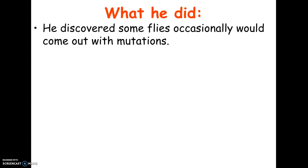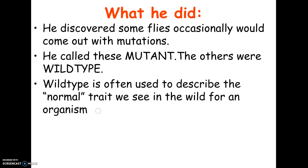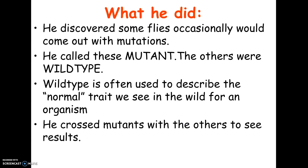Morgan discovered that occasionally flies came out with mutations. They even exposed flies to X-rays, which cause mutations in DNA. When a fly appeared with a mutation he called it a mutant fly, and the normal ones were called wild type. You should be familiar with that term — wild type describes the normal version of a trait seen in nature.